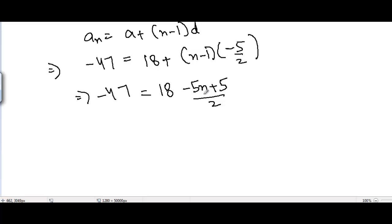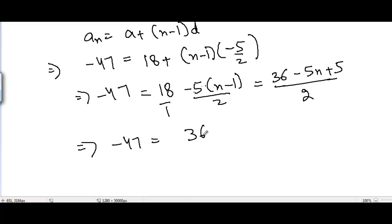Because -5 times n is -5n and +5 here. I will write -5(n-1)/2, and I can take LCM here. 2 would be the LCM and I will get 36 - 5n + 5 here. So I get -47 = (36 - 5n + 5)/2.